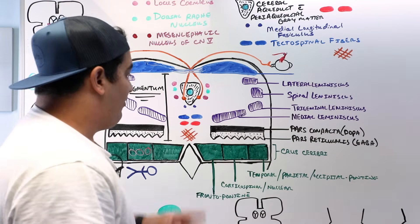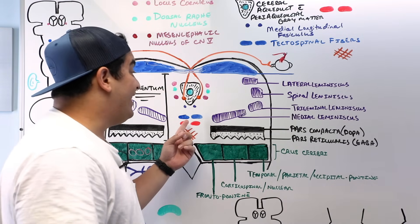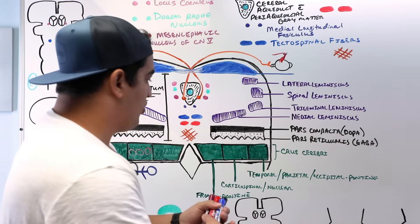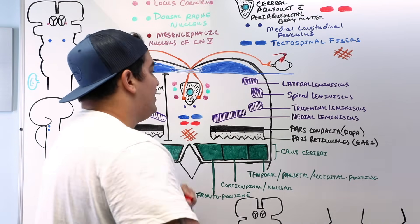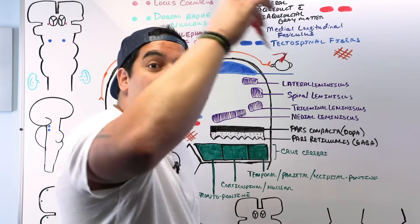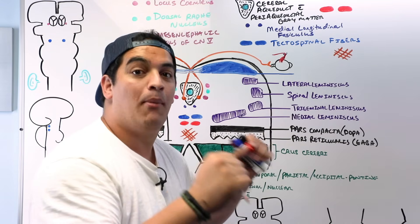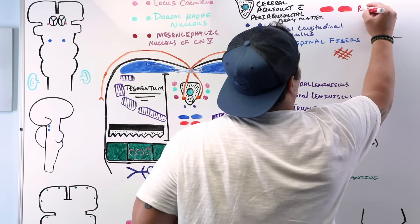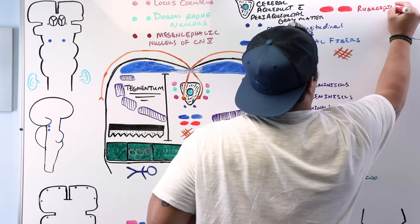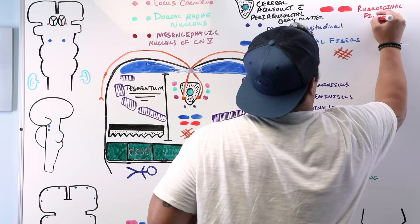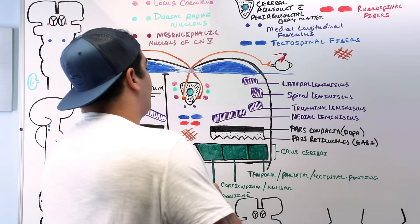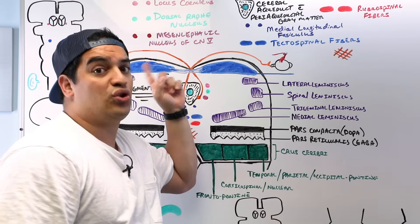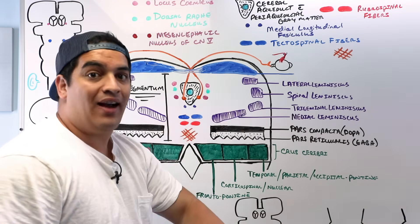The red fibers are the rubrospinal pathway — descending fibers from the red nucleus going to the lower motor neurons, primarily controlling flexor muscles of the distal extremities.